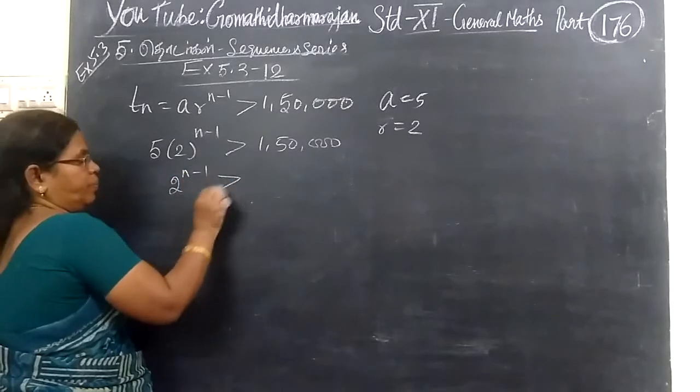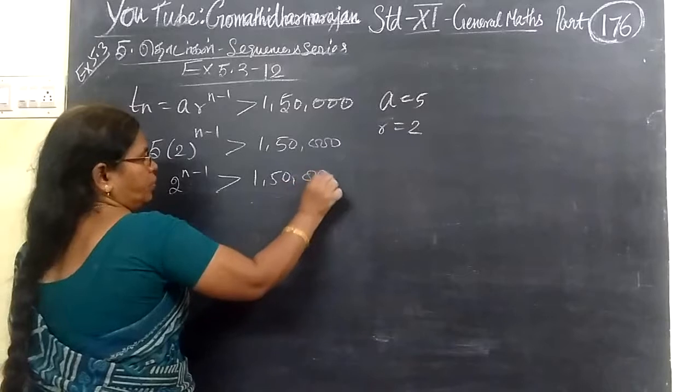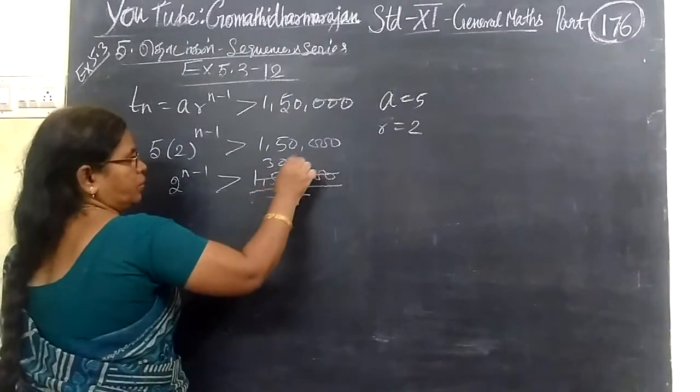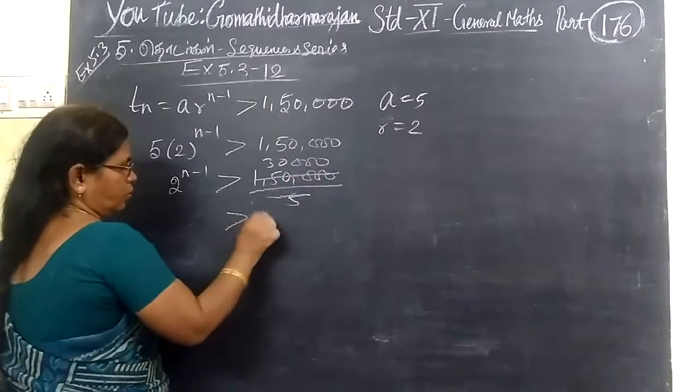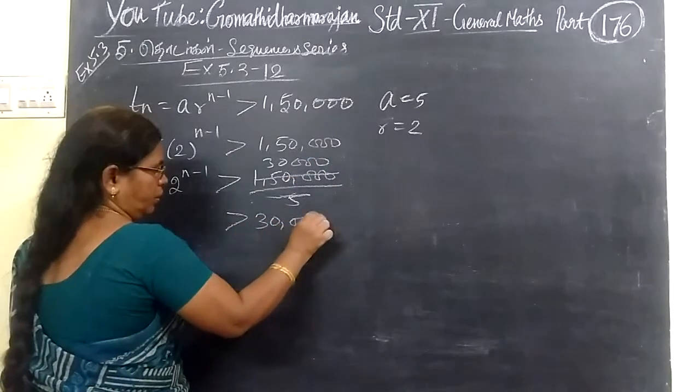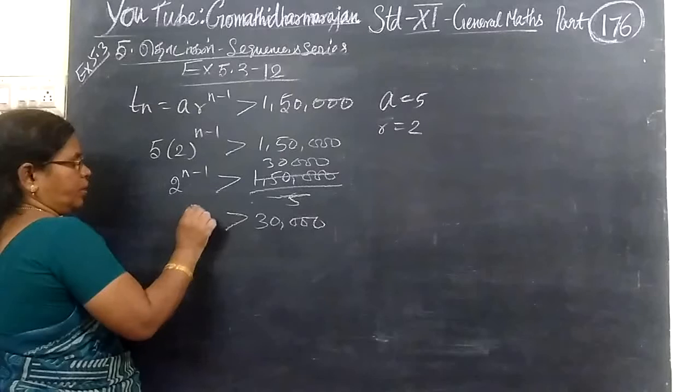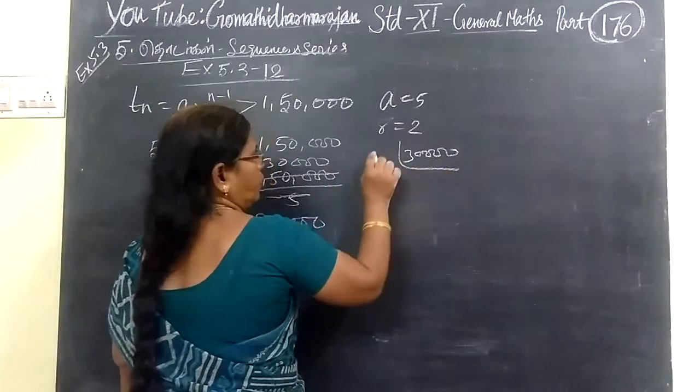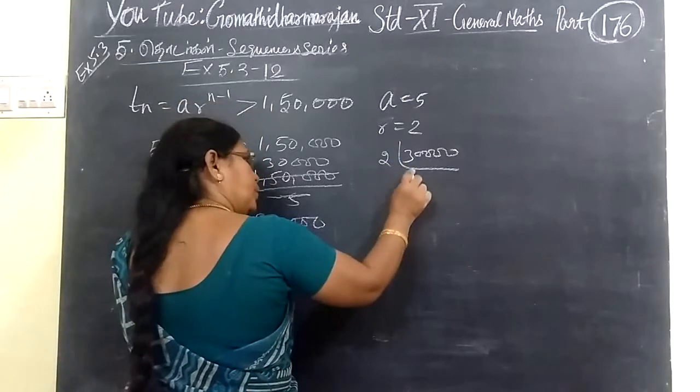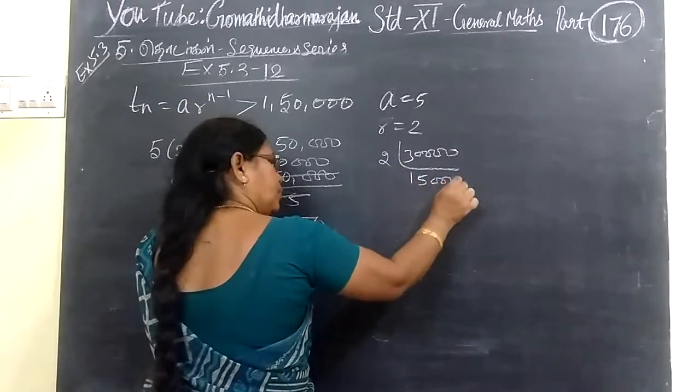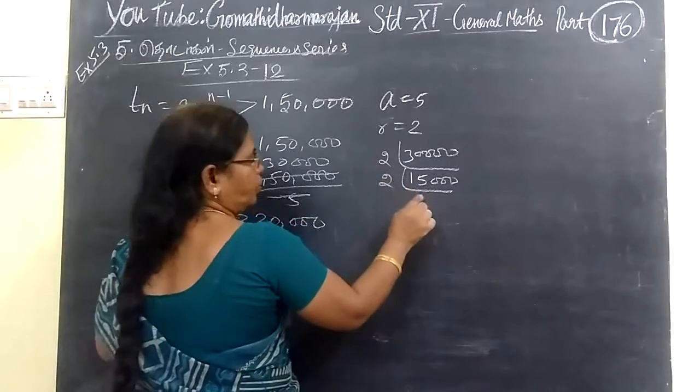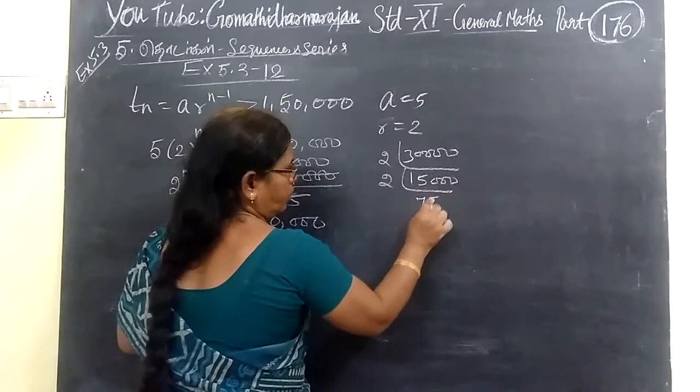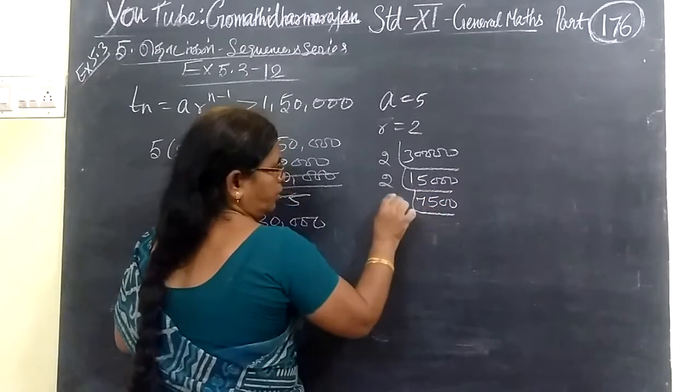So, 5 times 2 power n-1 greater than 1,50,000. If you divide by 5, you get 30,000. You get 2 power n-1 greater than 30,000. If you divide by 2 repeatedly, 15,000, then 7,500, then 3,750, 1,875.